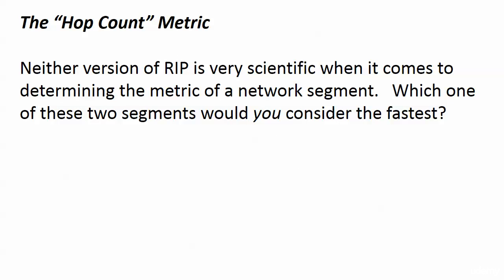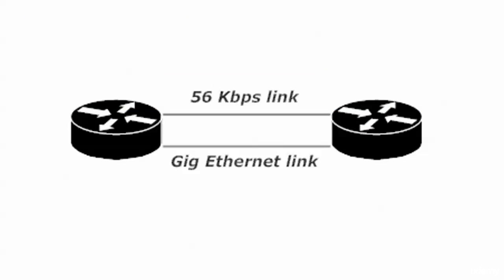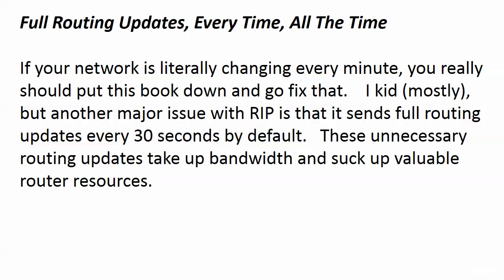Let's go back and talk about hop count. Neither version of RIP is very scientific when it comes to determining the metric of a network segment, because hop count is the only thing it understands. You and I could look at a gigabit Ethernet link and a 56K link and say the gigabit link is faster — but RIP considers these two links to be the same speed. It's one hop; the same metric to RIP. You could tweak it, but other protocols we'll learn about later handle that automatically.